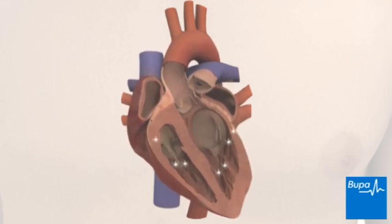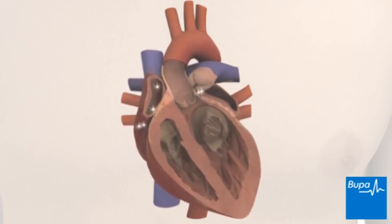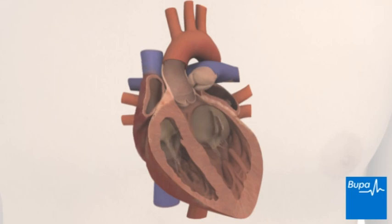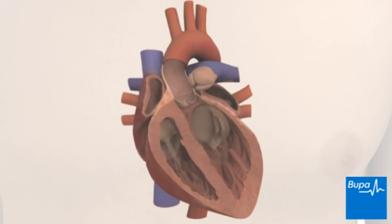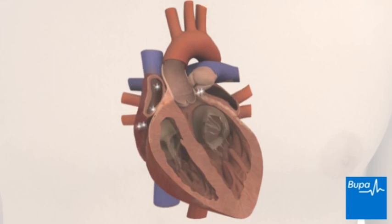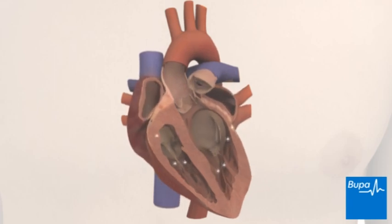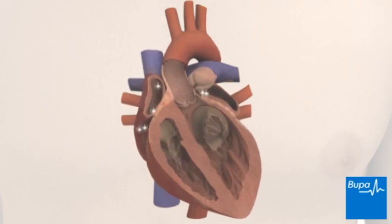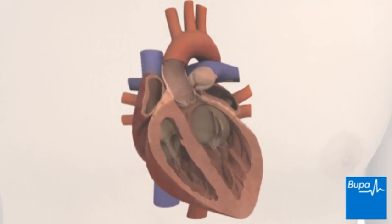In heart block, the electrical impulses that control your heartbeat are slowed down or blocked as they travel through your heart. This can result in a slow heart rate.